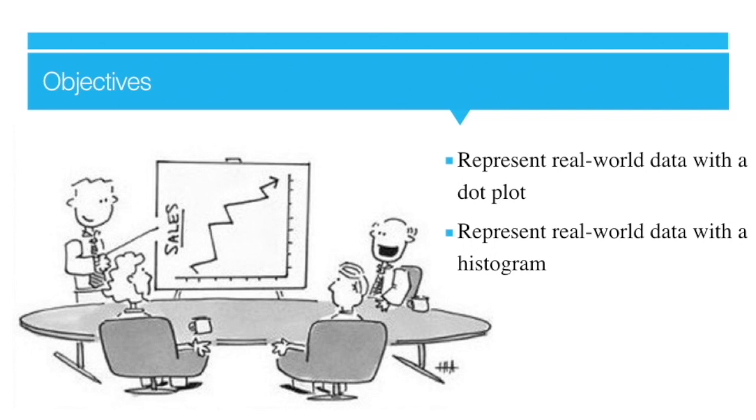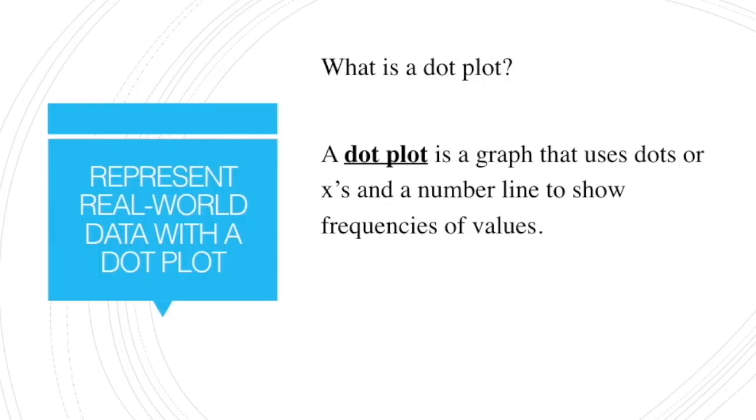It is important when we have graphical displays that we all are on the same page. So that's what is important about graphs. Today specifically we're looking at a dot plot and a histogram. And a dot plot simply is the collection of dots or X's on a number line to show the frequency of the values in the data.